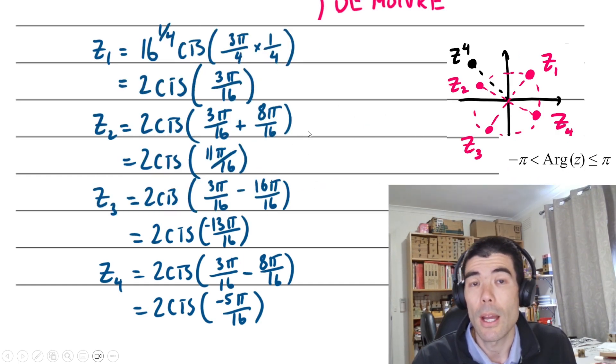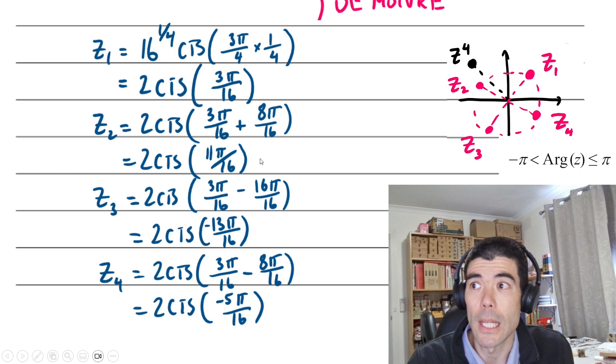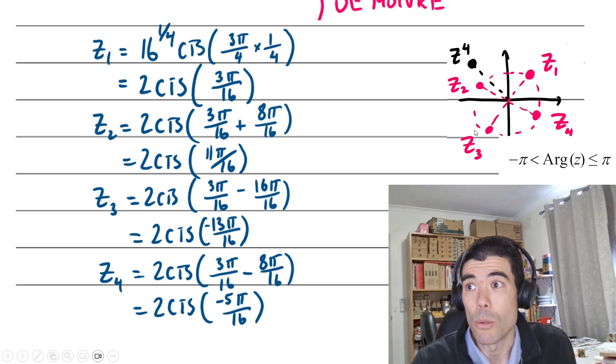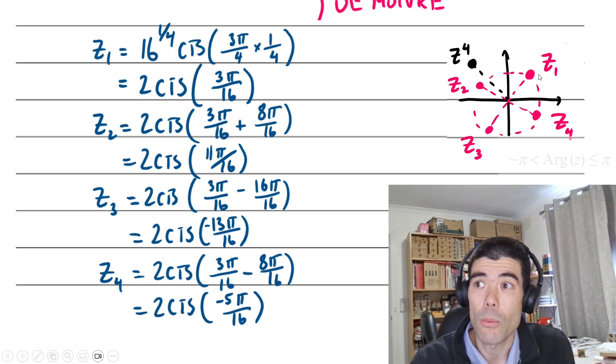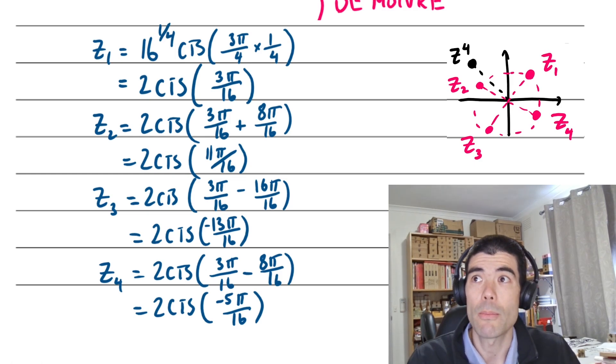The question said we want principal arguments, so be careful not to go above π or below negative π. For z2, we take 3π/16, add 8π/16 to get 11π/16. For z3, I'm going to go backwards, because if I go forwards my angle will be beyond π. I'll start from z1 and subtract one full π or negative 16π/16, giving negative 13π/16. For z4, take 3π/16, take away 8π/16, get negative 5π/16. The diagram really helps to check they are actually π/2 apart.